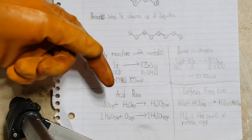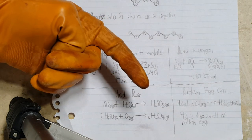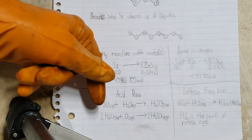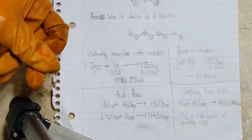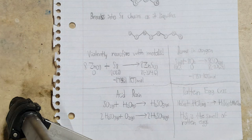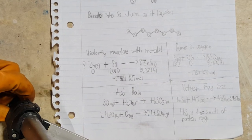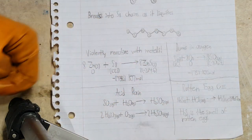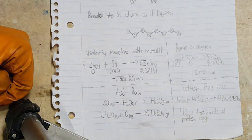Sulfur dioxide reacts with water to produce sulfurous acid, an intermediate in acid rain formation, and then this unstable sulfurous acid reacts with oxygen to form sulfuric acid, which lowers the pH of rain, therefore lowering the pH of any body of water exposed to that rain. Sulfides formed when metals react with sulfur can react with acid to form hydrogen sulfide — the smell of rotten eggs — which is also quite toxic.